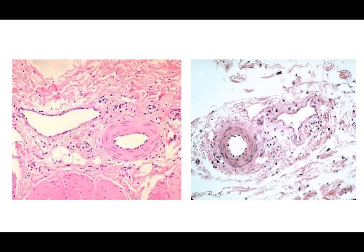This image shows an artery with smooth muscle going around it, another artery, and two veins for comparison.